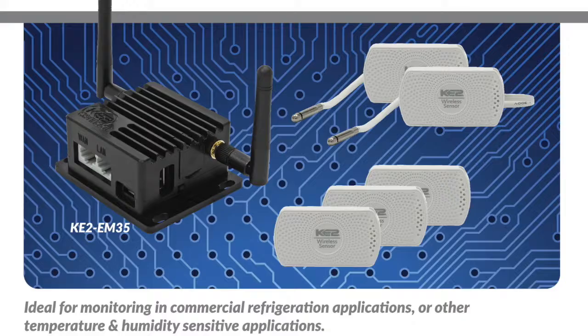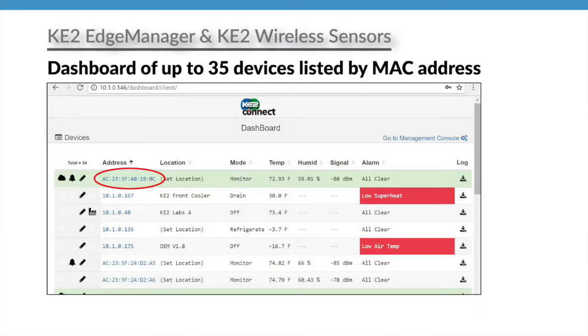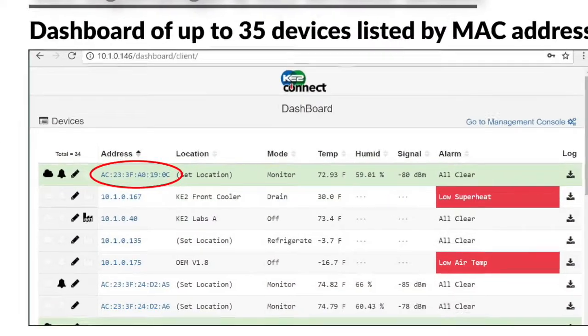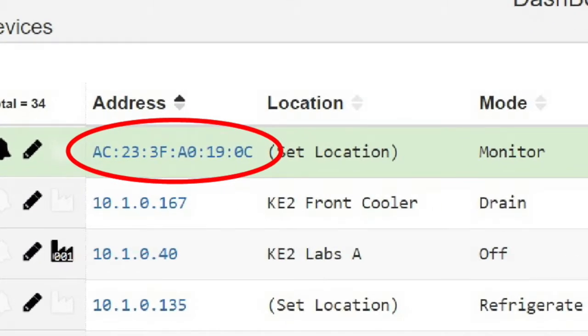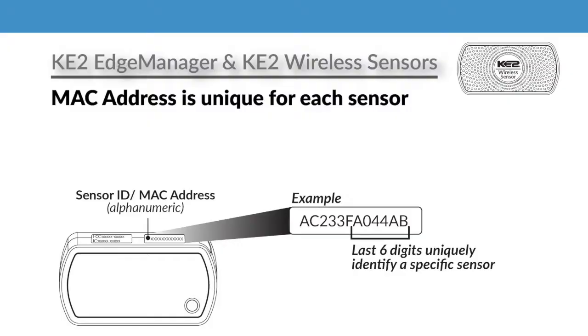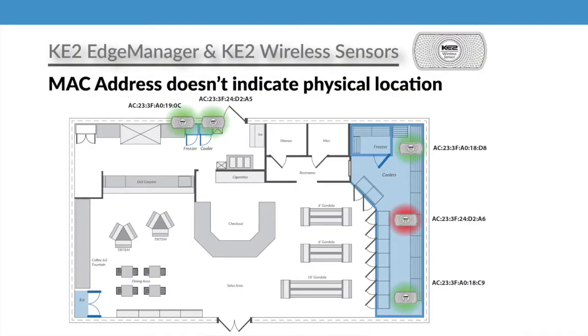Hi, I'm Patricia Bleckman. If you're using the Key2 Edge Manager and Key2 Wireless Sensors, and you've pulled up the dashboard, you probably noticed that the devices are listed by their unique MAC address, which is essentially the sensor's name, which doesn't help you actually know where your sensor is in the facility.